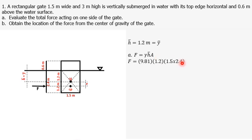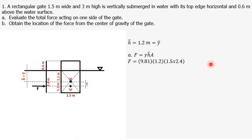Substituting our values: γ = 9.81 kN/m³ for water, H-bar = 1.2 m, and A = 1.5 × 2.4 m² (base times height of the submerged rectangle). Checking unit consistency: 9.81 kN/m³ × meters × m² gives kilonewtons. Solving for F gives 42.38 kilonewtons.